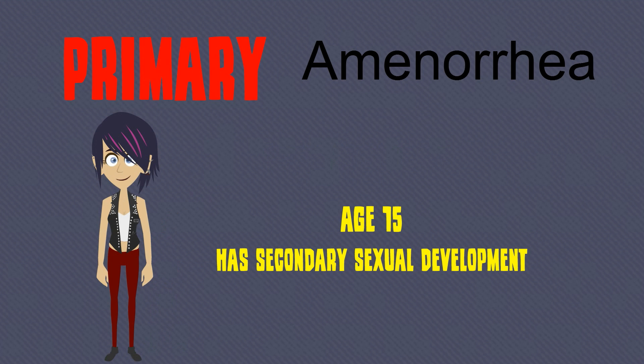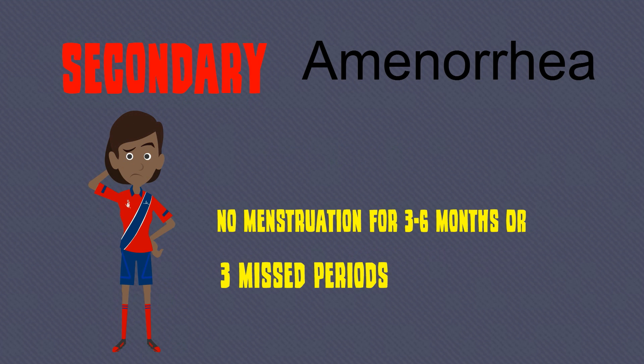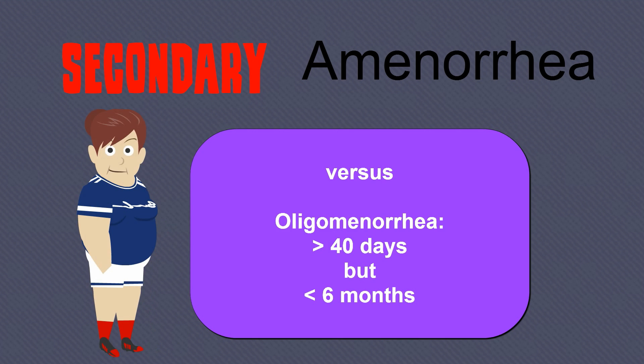Alternatively, by age 15, if she has never menstruated and has secondary sexual development, she is also classified as having primary amenorrhea. Secondary amenorrhea is diagnosed when a menstruating woman has not menstruated for three to six months, or has missed three periods. These terms should not be confused with oligomenorrhea, which is the reduction of the frequency of menses with bleeding-free days greater than 40.